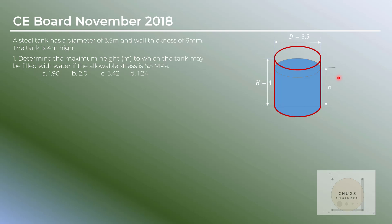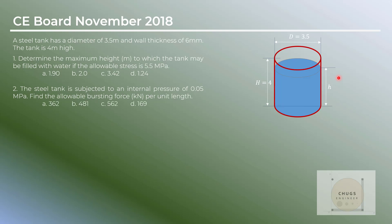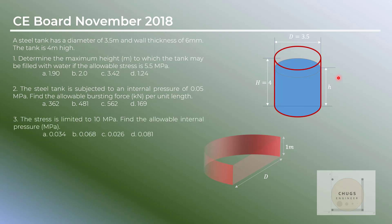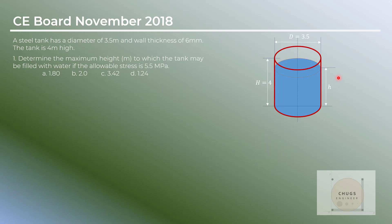The choices for letter A is 1.9, letter B is 2.0, letter C is 3.42, and letter D is 1.24. For number two, the steel tank is subjected to an internal pressure of 0.05 megapascal or 50 kilopascal — find the allowable bursting force in kilonewton per unit length. For number three, the stress is limited to 10 megapascal — find the allowable internal pressure.